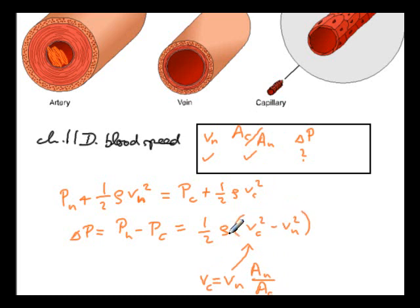Square 0.44 and subtract 0.11 squared, then multiply by the density of blood. The problem doesn't state it, but we assume it's essentially the density of water: 1,000 kilograms per cubic meter. So it's 1,000 times one-half times (0.44² − 0.11²). That gives us the difference in blood pressure in Pascals — it comes out rather small, only about 100 Pascals. But even that degree of arterial constriction can lead to serious health problems.